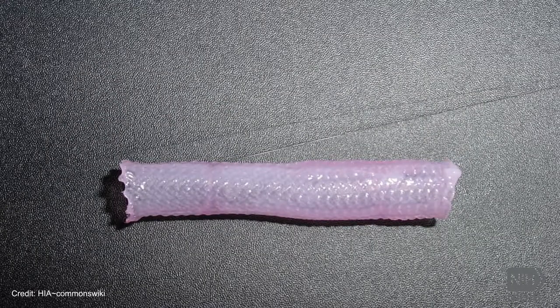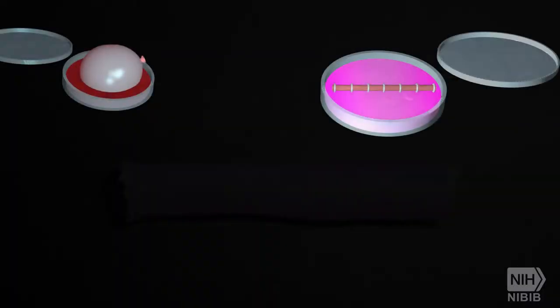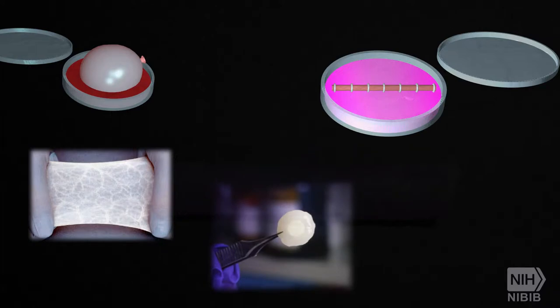Some examples of tissues and organs that have already been successfully tissue engineered and implanted in humans include bladders, small arteries, skin grafts, cartilage, and even a full trachea.